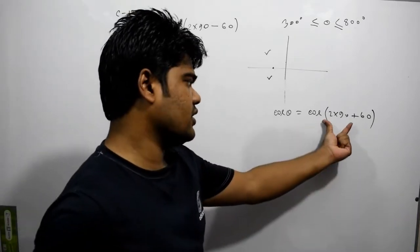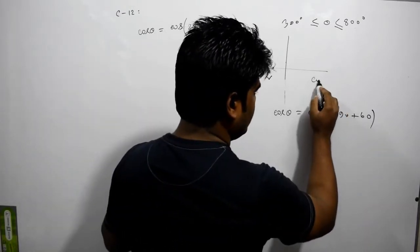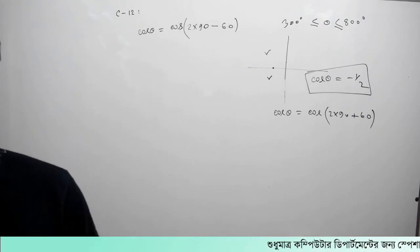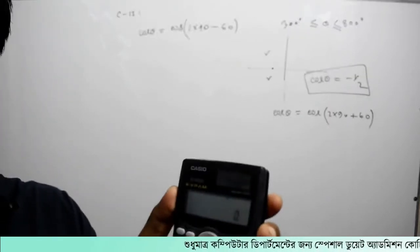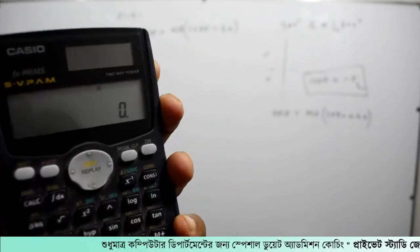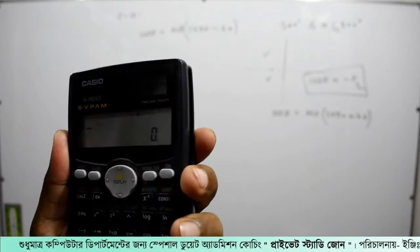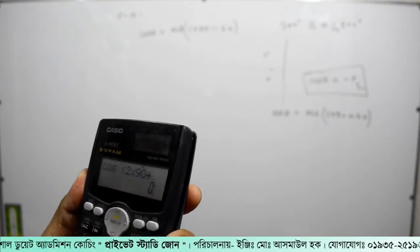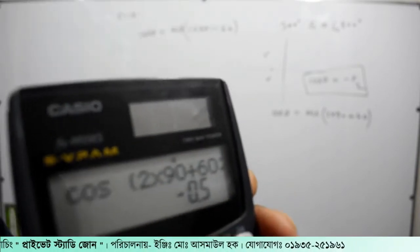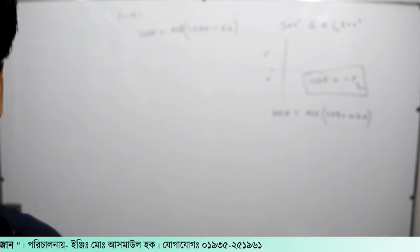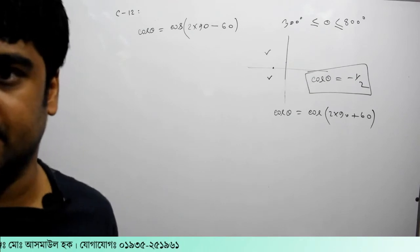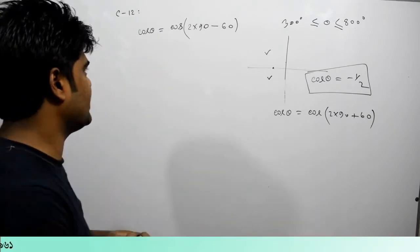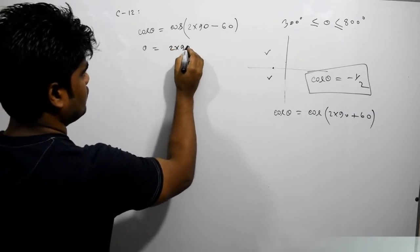Cos(theta) is equal to minus half. So cos(theta) equals minus half. If we want to calculate this — look at the calculator. Minus half is equal to cos(2π/3), since minus cos is half. So this is the same degree. We can write: cos(theta) equals cos(2π/3), or equivalently 120 degrees. So our solution is complete.